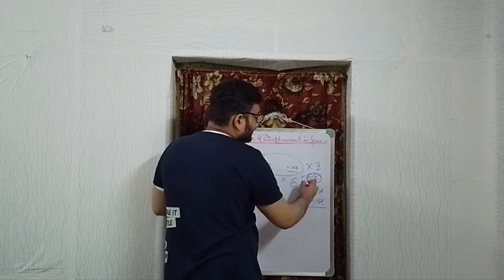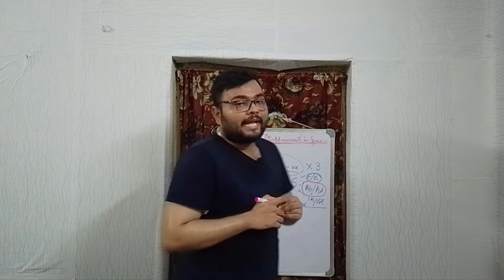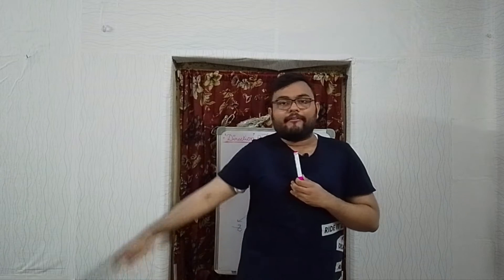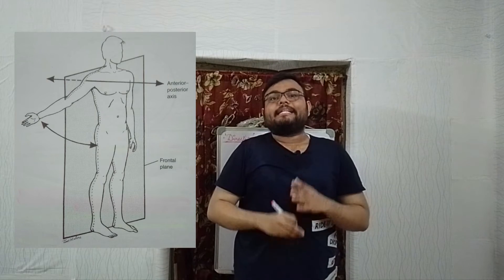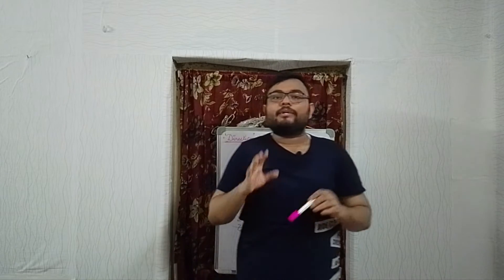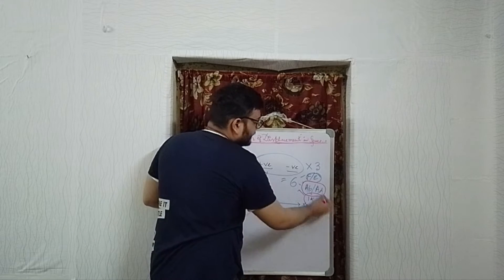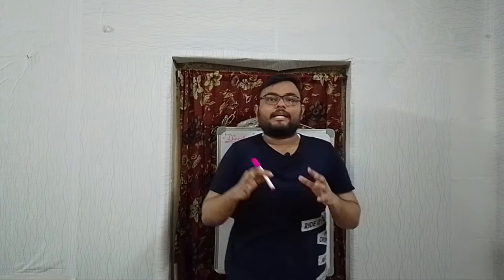The second pair of rotary movement is abduction and adduction. Abduction means away from the body and adduction means towards the body. You can see this movement from the frontal view, so it occurs in the frontal plane. The axis perpendicular to the frontal plane is the anterior-posterior axis or the Z axis. So abduction and adduction happen in the frontal plane around the anterior-posterior or Z axis.